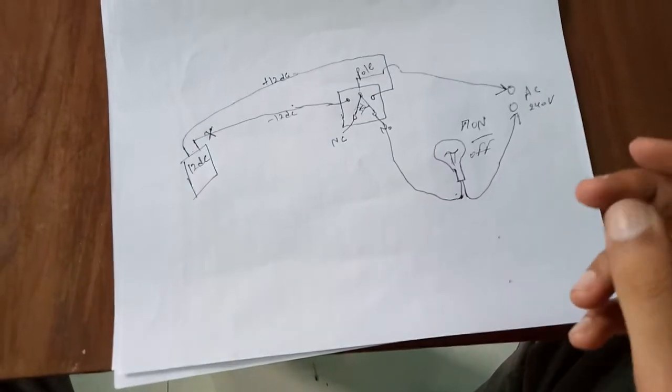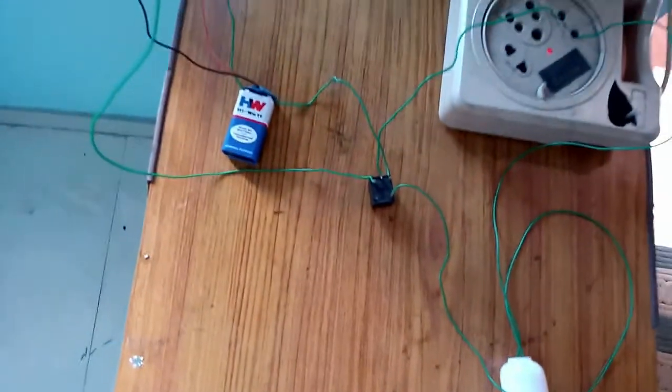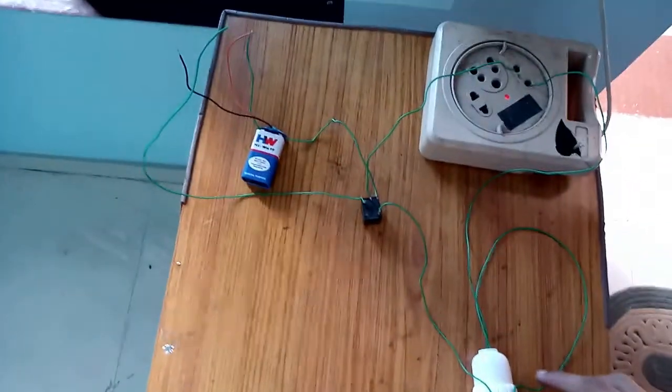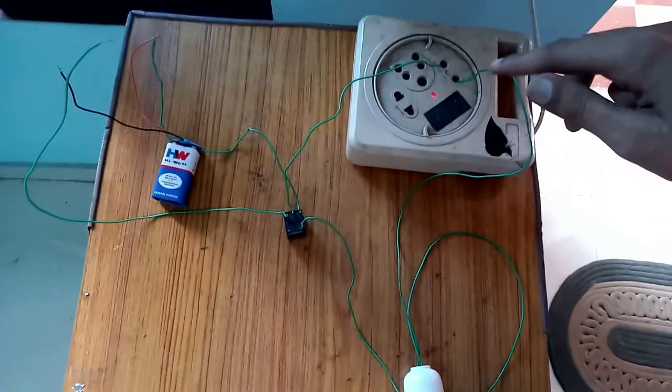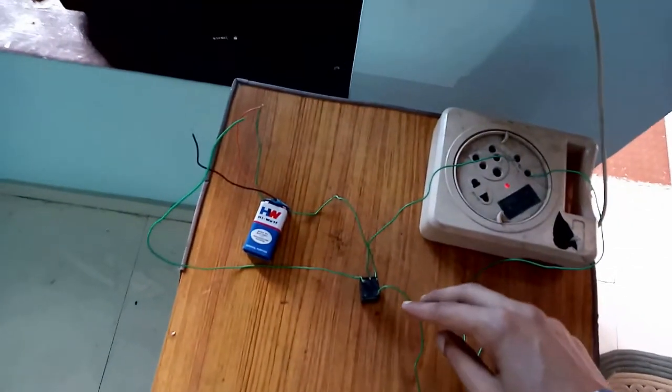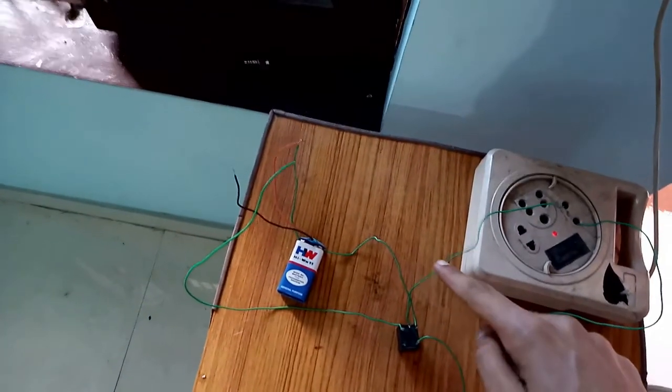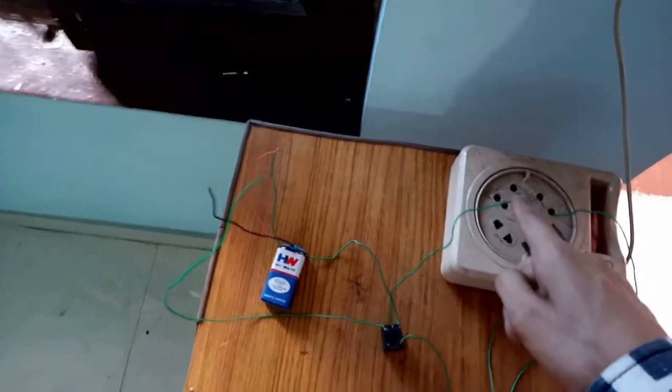Now move to the practical section. So you can see here, first wire of my bulb is connected to AC connection, and second wire of my bulb is connected to normal open pin of relay. And pole is directly connected to AC connection.